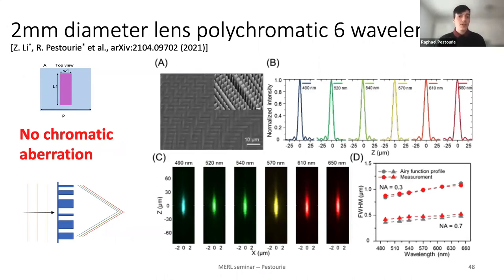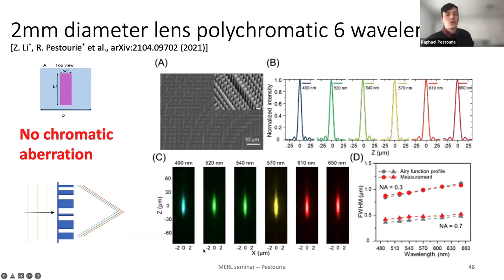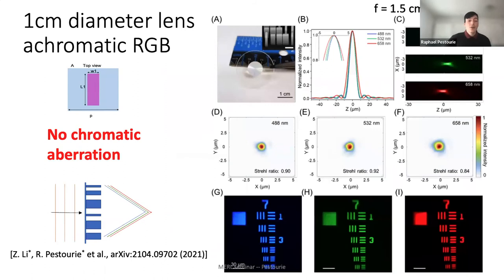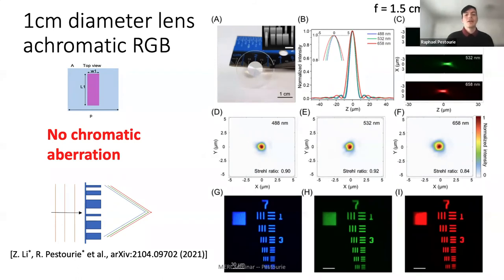We designed a 2-mm diameter lens for six wavelengths across the visible, from 490 to 650 nm. The focal spot shows no chromatic aberration, and for 46 wavelengths focal spots were diffraction-limited for two numerical apertures of interest. We also did a 1-cm diameter lens for red, green, blue — the design is so big you can see it with the naked eye. The chromatic aberration is only a few microns while the focal length is 1.5 cm — a 0.03% aberration — and it was successfully used for imaging.